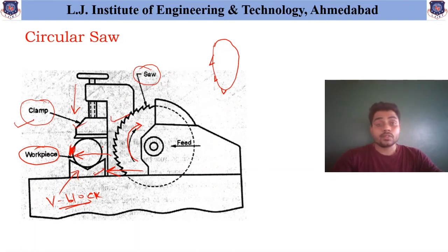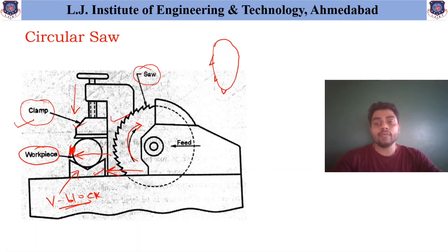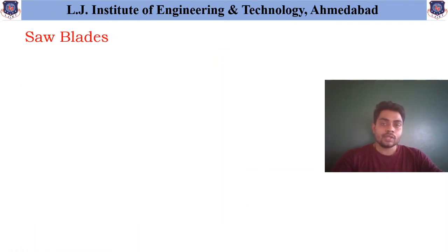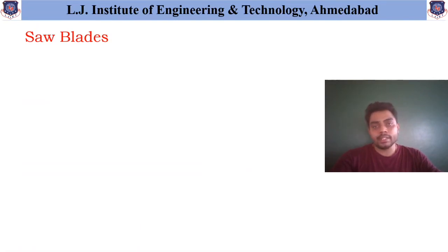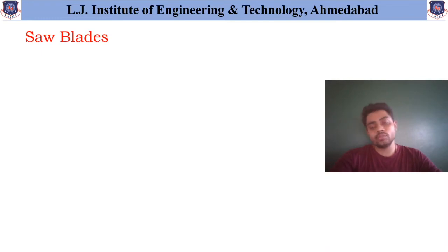So now we have discussed the major important different types of saws — that is the reciprocating saw, band saw, and the circular saw. I hope that you have clarity about these different types of saws and when these different types of saws are useful. So now let us discuss about the saw blades — how these saw blades are made and what are the important terminologies available in the saw blades.